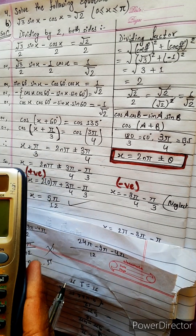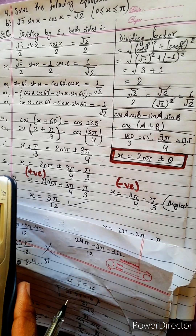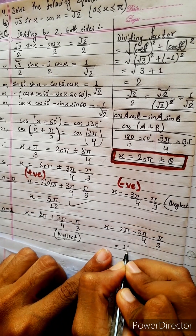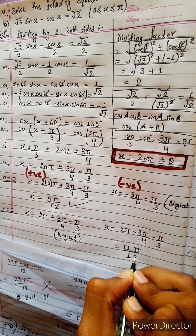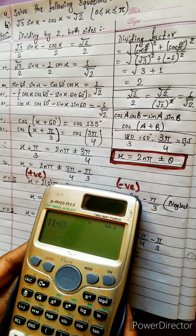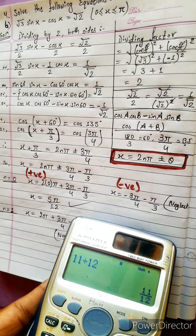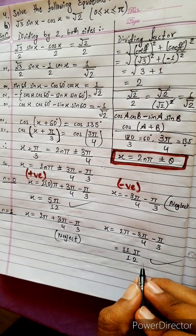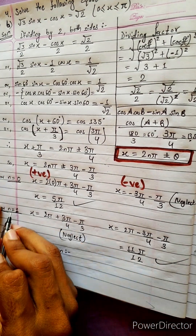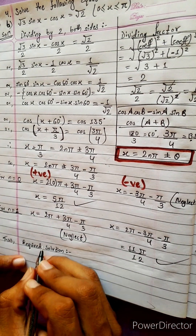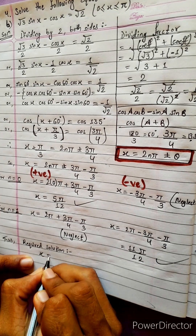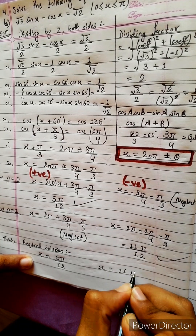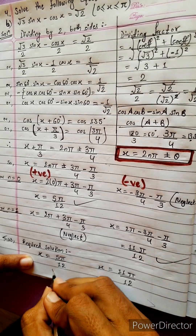Let's check the negative sector: 2 into 1 into π means 2π. Negative: 2π minus 3π by 4 minus π by 3. LCM 12: 24π minus 9π minus 4π. 24 minus 13 is 11. So 11π by 12. Is this less than 1π? Of course — 11 by 12 means approximately 0.9, which is of course less than π, so it is inside the range. x equals 11π by 12. These two are our answers: x equals 5π by 12 and x equals 11π by 12.